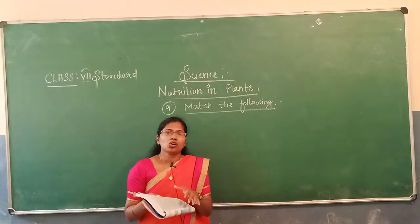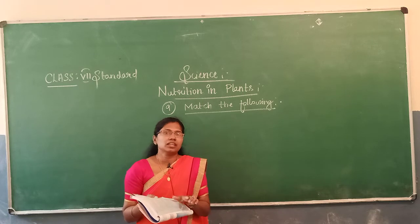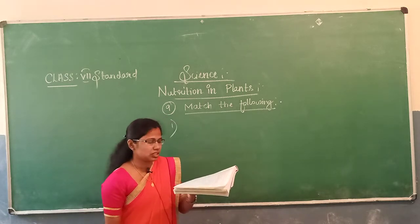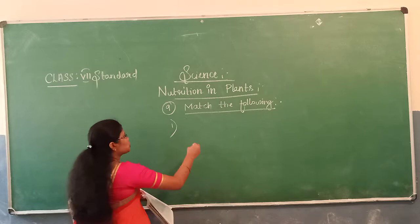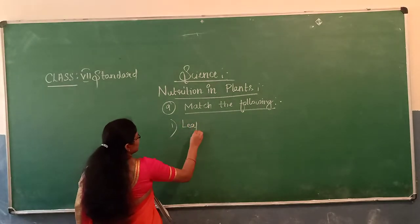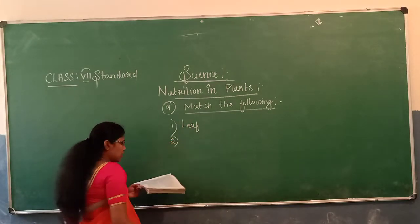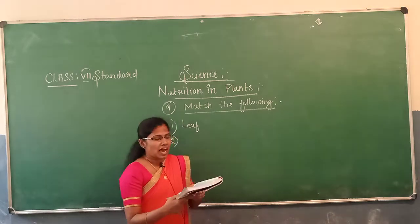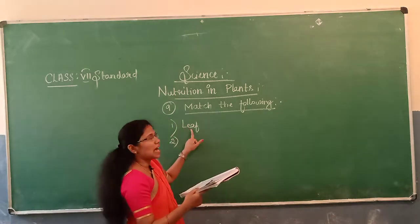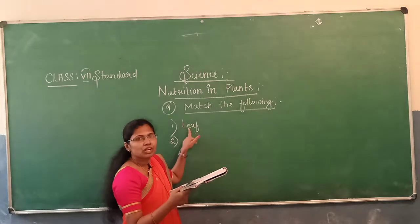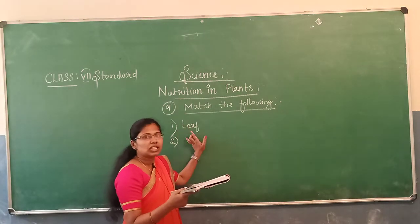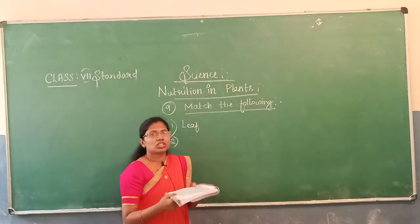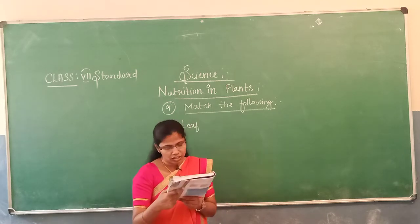The first item is chlorophyll. Chlorophyll is a green colour pigment and it is present in the leaf. So the first answer: chlorophyll matches with leaf, because the leaf contains a green colour pigment called chlorophyll.